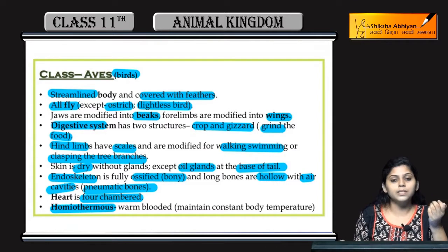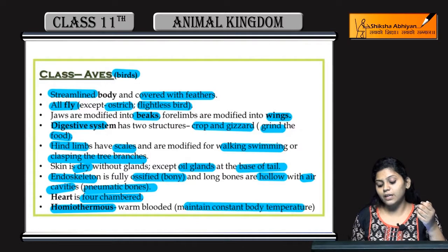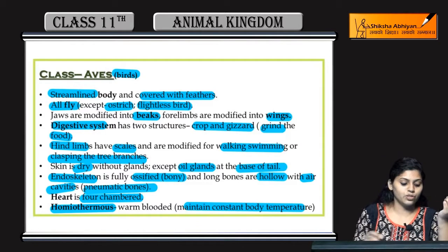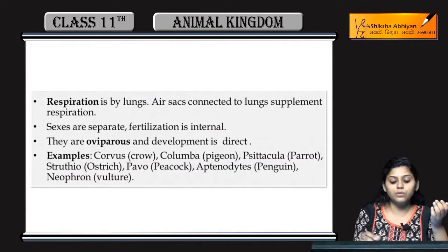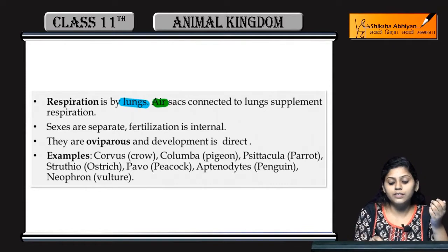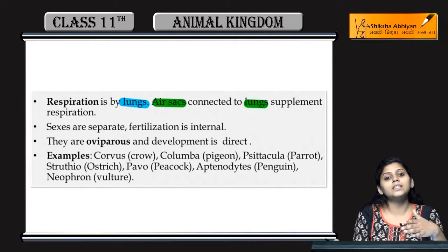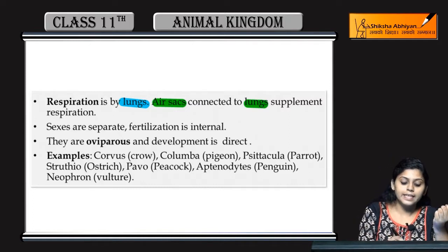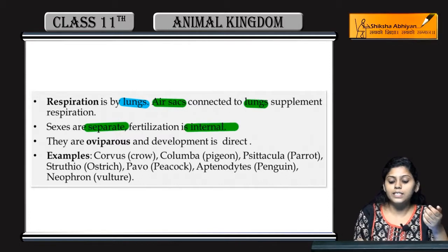They are homeothermos, means warm-blooded animals hote hai — ye maintain kar sakti hai constant body temperature. Their respiration is through lungs, and lungs ke saath saath kuch air sacs bhi present hote hai those are connected to the lungs. Ye lungs ko supplement karti hai for respiration.